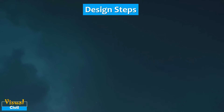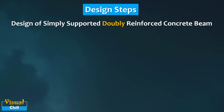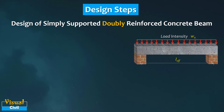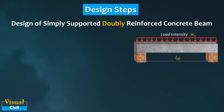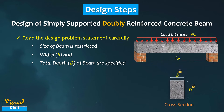In this video we will try to understand the steps for the RCC design of a simply supported doubly reinforced rectangular beam as per IS 456-2000, for the examination point of view. First of all, read the problem statement carefully. Generally, restricted width and total depth of the beam are specified in the problem statement. Then note down the given data.